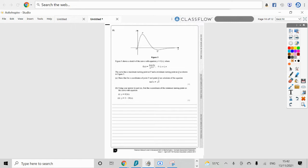Okay, this is question number 15 now, the last one on this paper. Figure 5 shows a sketch of the curve with the equation y equals f of x, where f of x is equal to 4 sine 2x over e to the power of root 2x minus 1, where x is greater than or equals to 0 but less than or equals pi. The curve has a maximum turning point at p and a minimum turning point at q as shown in figure 5. Part A shows that the x-coordinates of p and the point q are solutions of the equation tan 2x is equal to square root 2.